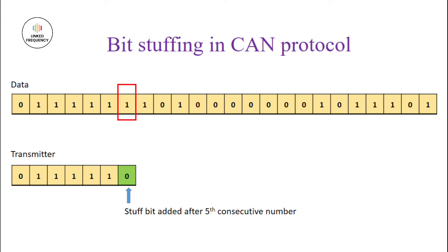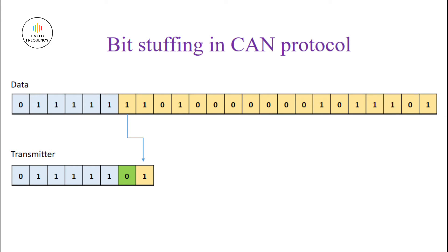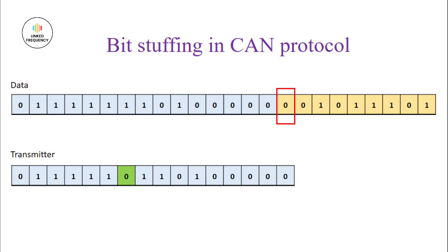Since all the data was of value 1, we are adding the stuff bit as 0. After the addition of the stuff bit, the further data is considered as usual from the next position. The screen represents the flow of the data to be considered, and this process continues as long as a similar situation is encountered.